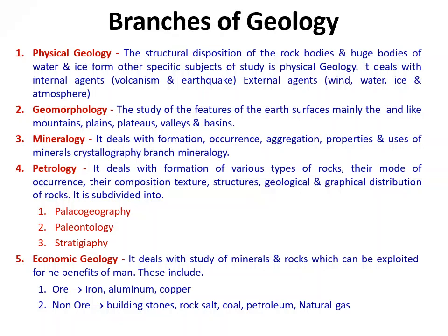Geomorphology is a part of physical geology, but here we study only land surfaces. The next branch is mineralogy — its name itself indicates minerals. There are many types of minerals on the surface of the earth. Mineralogy deals with the formation, occurrence, aggregation, properties and uses of minerals. A sub-branch is crystallography. The next branch is petrology — it deals with the formation of various types of rocks, their mode of occurrence, composition, structure, and geological and geographical distribution.